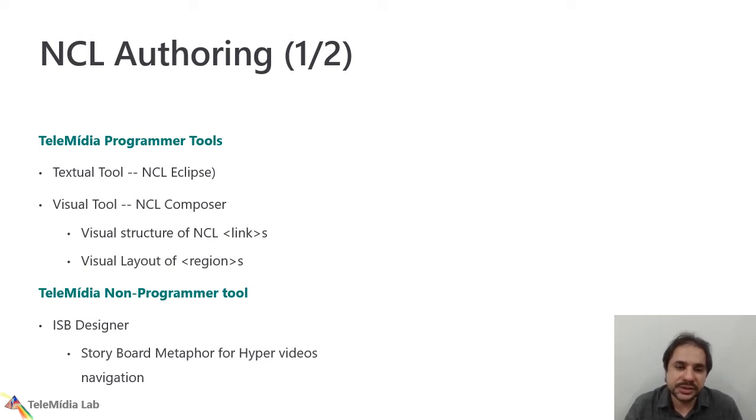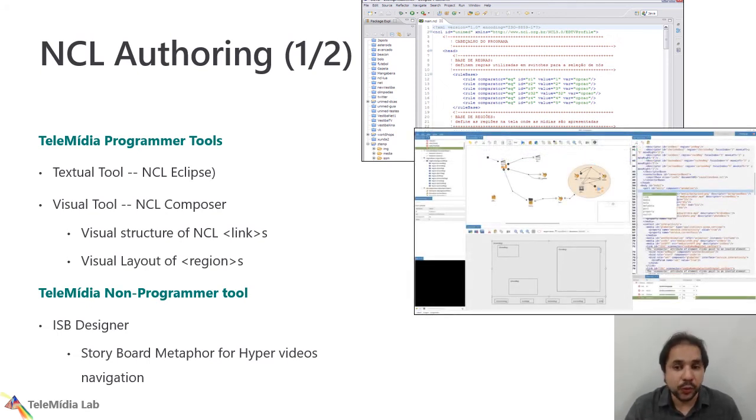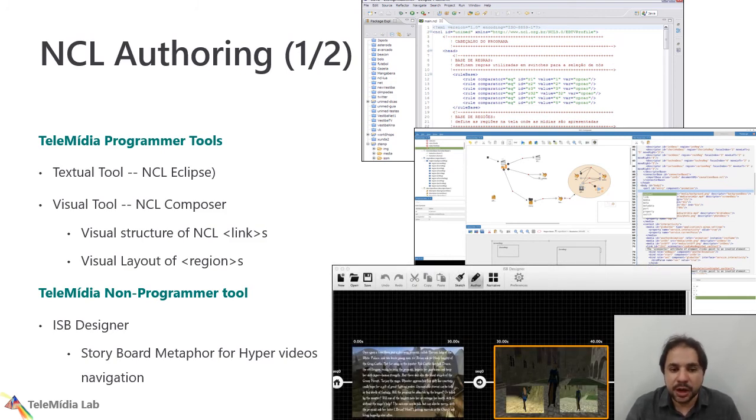Here, we discuss a little bit how we develop some NCL applications. Here in telemedia, we have two types of programming tools. First, we have the textual tools, like the NCL Eclipse, that is an Eclipse plugin that is easy to support the editing of NCL documents. We also have NCL Composer, that has a set of views that the user better understand the structure of an NCL document. We have this layout view, that shows the region, and we also have the structure view, that shows the links and relationships among the nodes. We also have a new programming tool, that we call ESB design, that uses a metaphor of storyboard, that connects a set of scenes in sequence.